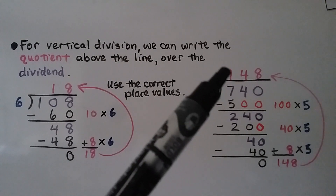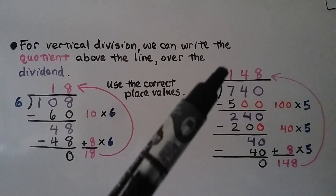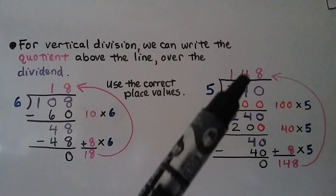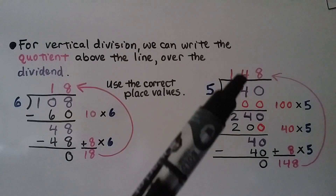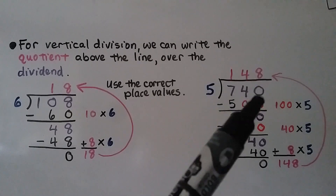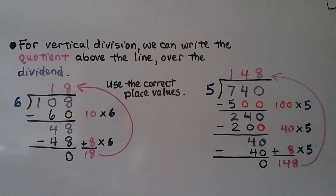We add 100 plus 40 plus 8, and our quotient is 148. We write the 1 in the hundreds place above the 7, the 4 in the tens place above the tens place, and the 8 in the ones place above the ones place.